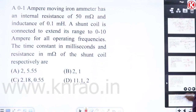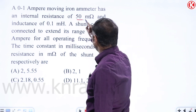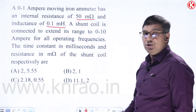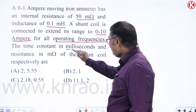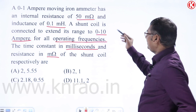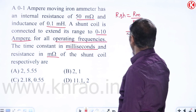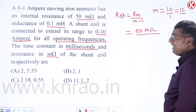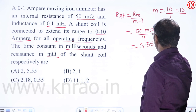Problem 3: A 0–1 A MI meter has internal resistance 50 mΩ and inductance 0.1 mH. A shunt coil extends its range to 0–10 A. Find the time constant (ms) and resistance (mΩ) of the shunt coil. M = 10/1 = 10, so Rsh = 50/(10−1) = 50/9 ≈ 5.55 mΩ.